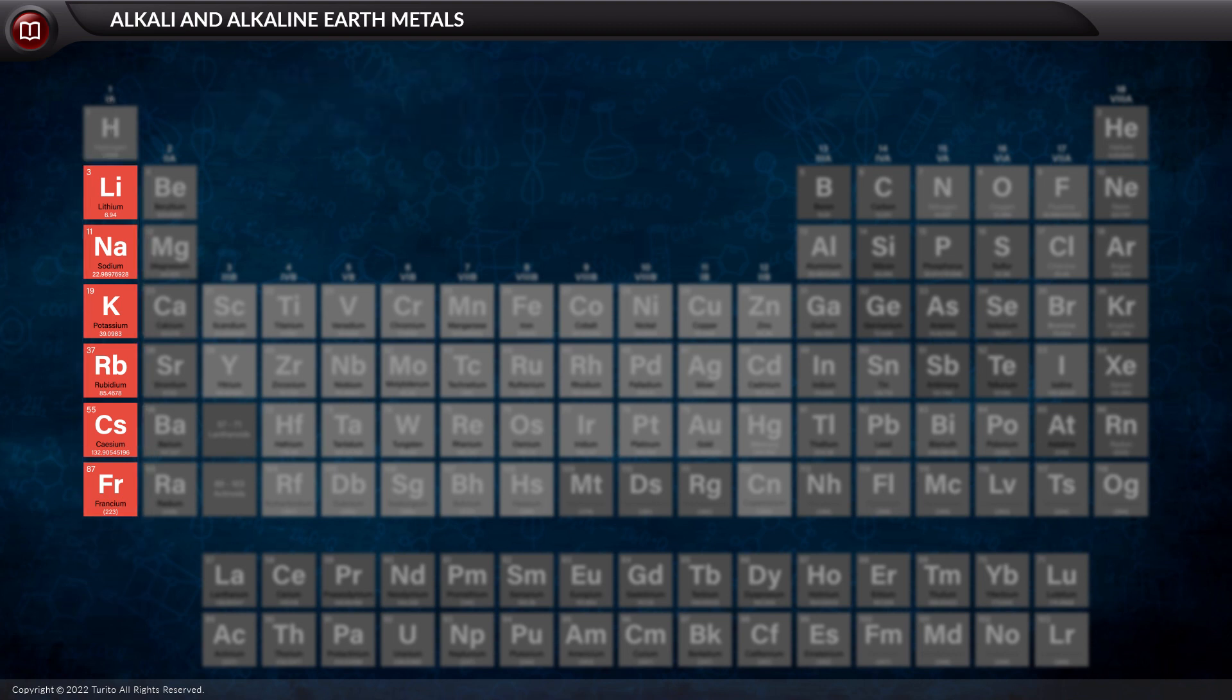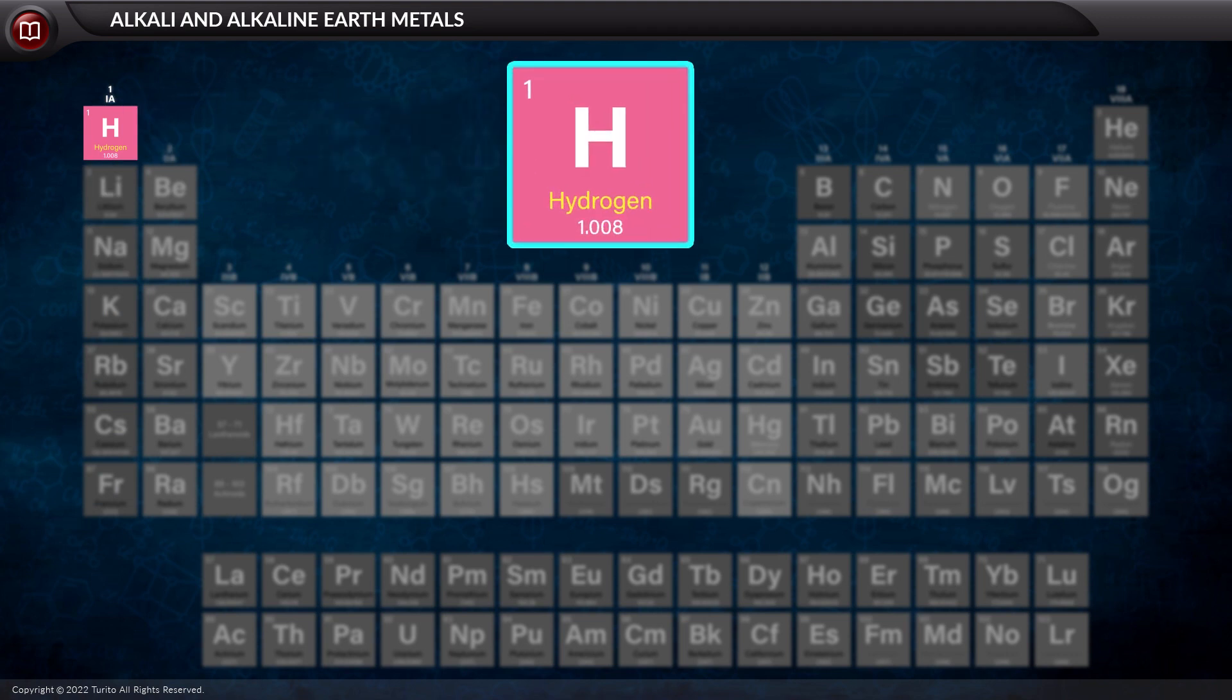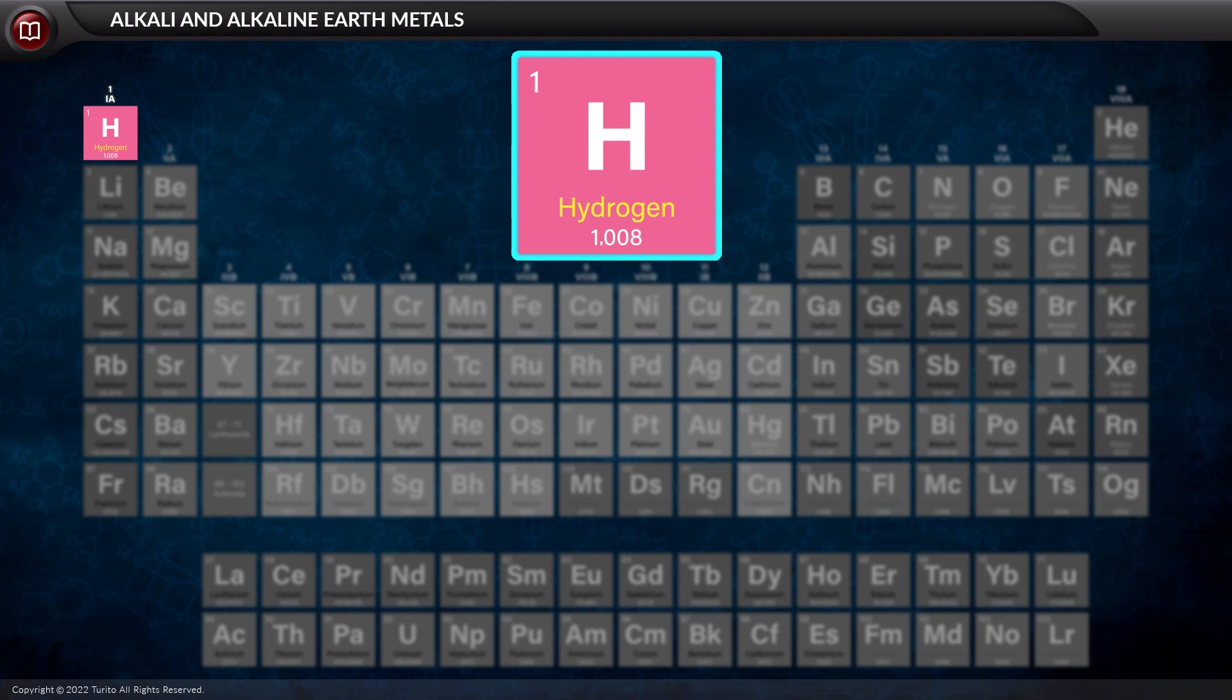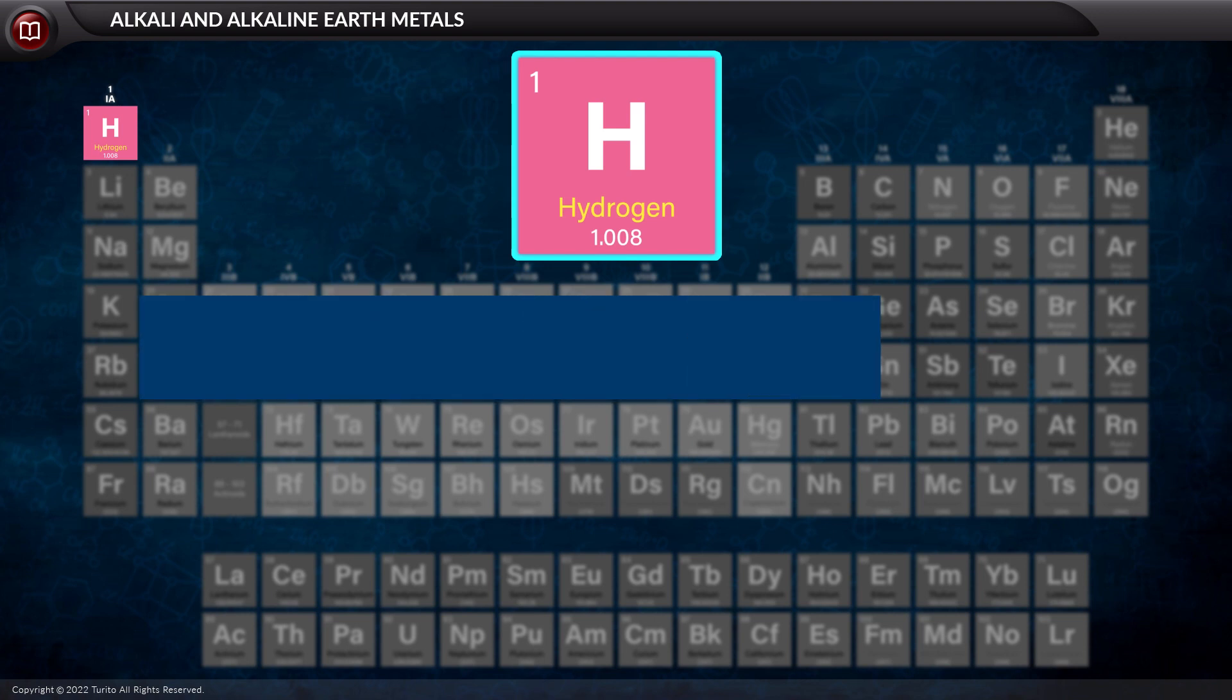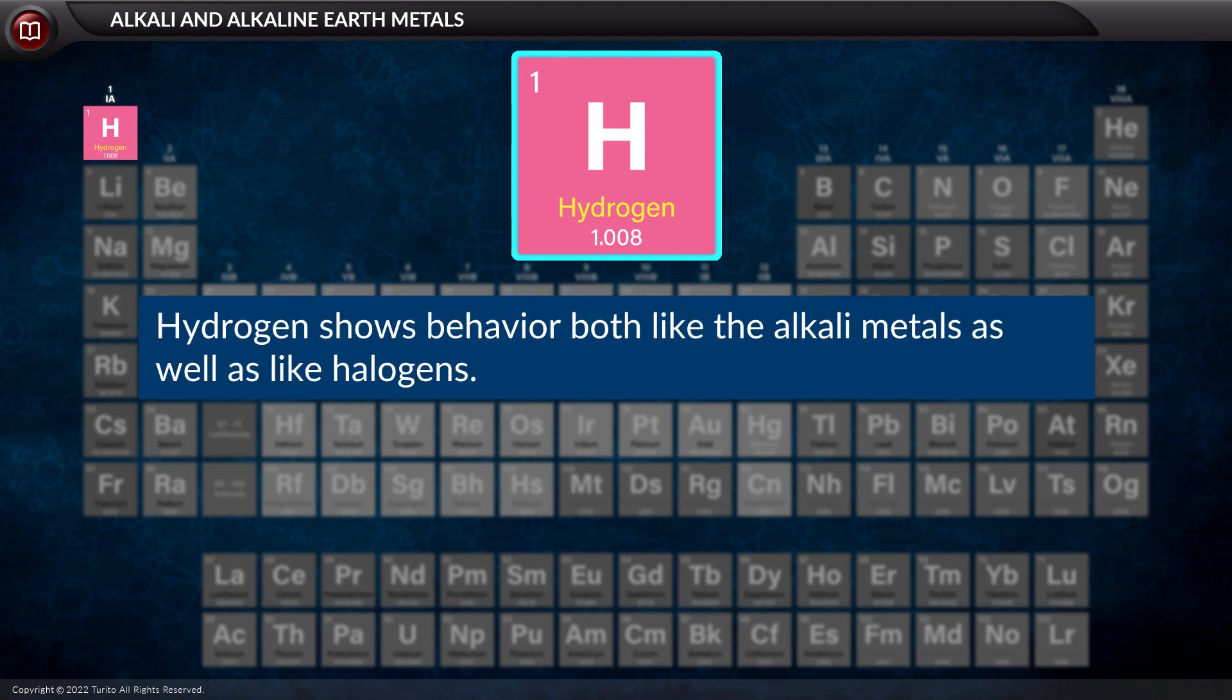On the top of the alkali metal is the hydrogen atom. Hydrogen, even though placed on the top of group one elements, is not an alkali metal. Why is it so? It is because hydrogen shows an anomaly in its position. Actually, hydrogen shows behavior both like the alkali metals as well as like halogens.